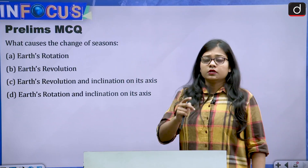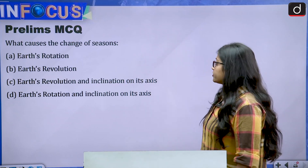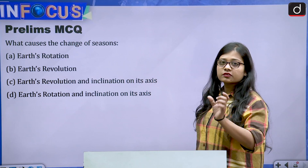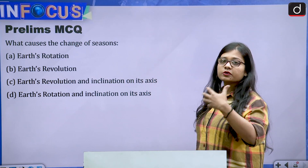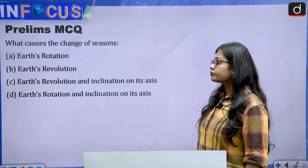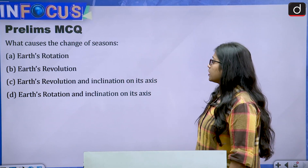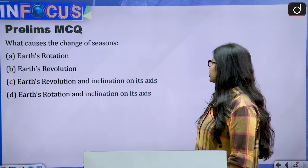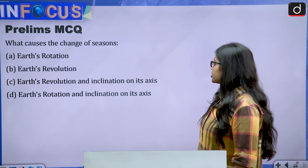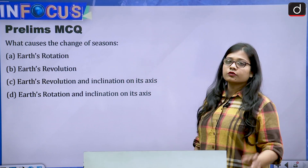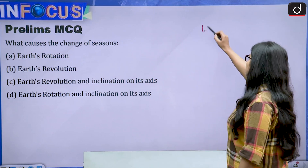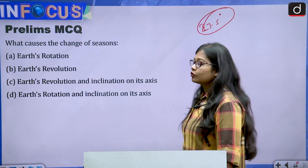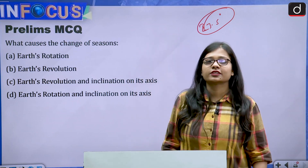For the Prelims MCQ, tell me the answer in the comment section: What causes the change of seasons — winter, summer, spring? The options are: Earth's rotation; Earth's revolution; Earth's revolution and inclination on its axis; or Earth's rotation and inclination on its axis. One hint: the inclination is 23.5 degrees. Give me the answer in the comment section — that's all for today.